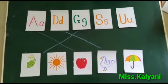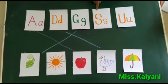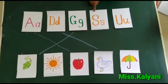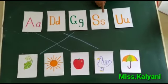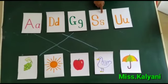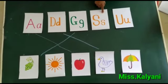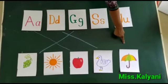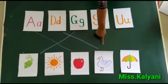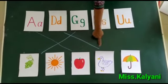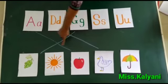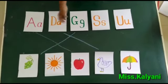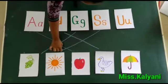Next letter. Which is this letter? Yes, S. Capital S, small s. S for? Very good, for sun. This is sun. No, this is sun. No, this is sun. No. And this is? Very good, this is sun. Then match it.